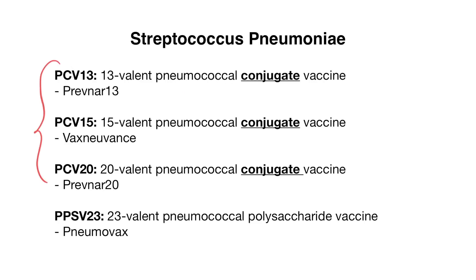The top three vaccines listed here are your pneumococcal conjugate vaccines, which is why they start with PCV. The numbers indicate the number of serotypes that they cover. At the very bottom we have our PPSV23, which stands for pneumococcal polysaccharide vaccine, and the number again indicates serotype coverage. Keep in mind the brand names listed on the slide, because these vaccinations are often referred to by their brand names.